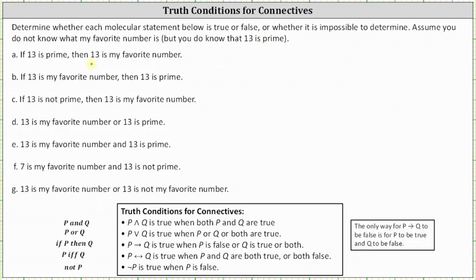For part A: If 13 is prime, then 13 is my favorite number. This is an if-then statement in the form of if P then Q. Here, 13 is prime is true, so P is true. But Q — 13 is my favorite number — is unknown. Since if P then Q is true when P is false or Q is true, and P is true but Q is unknown, we don't have enough information. If Q is true the statement is true; if Q is false the statement is false. So: not enough information.